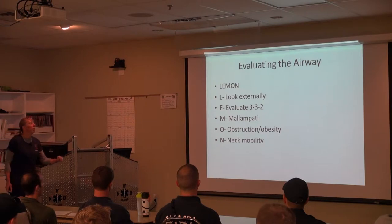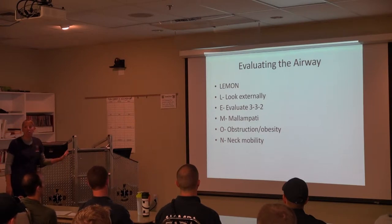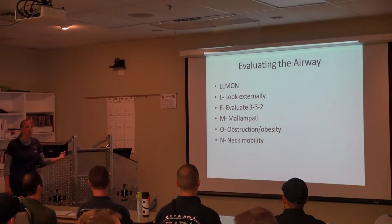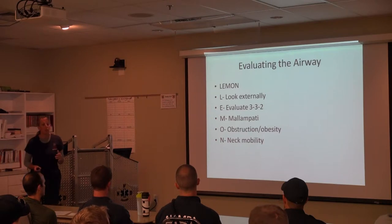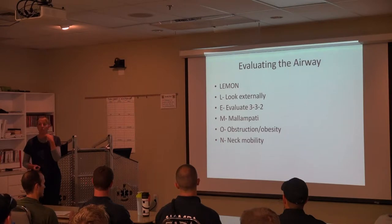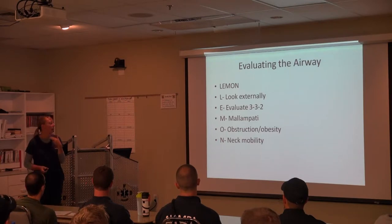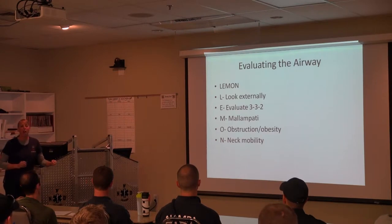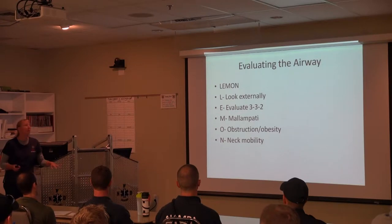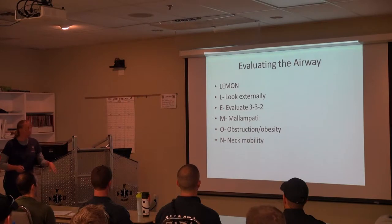There's a teaching called the LEMONS acronym for evaluating the airway. L is looking externally — all the things we just talked about. E is evaluating the 3-3-2: first three is mouth opening, second three is the mentum, and two fingers from the hyoid to the thyroid notch. Then you look at Mallampati scores, obstruction and obesity, and neck mobility.